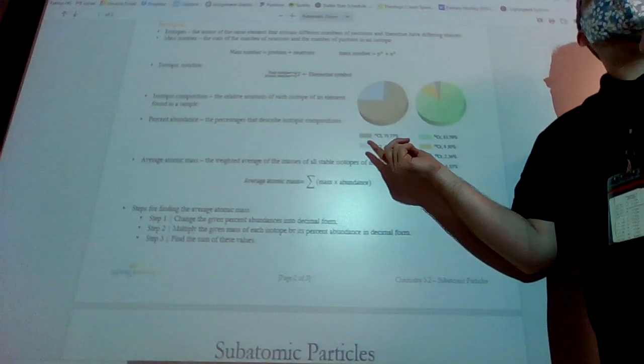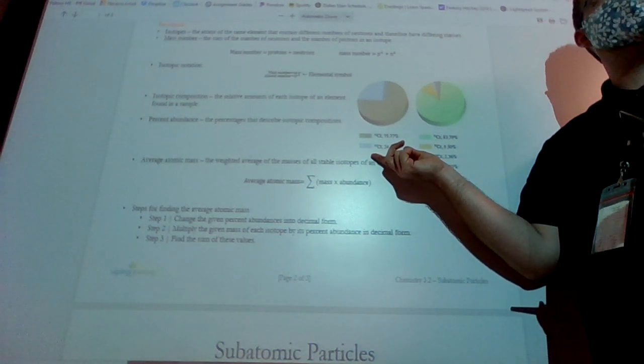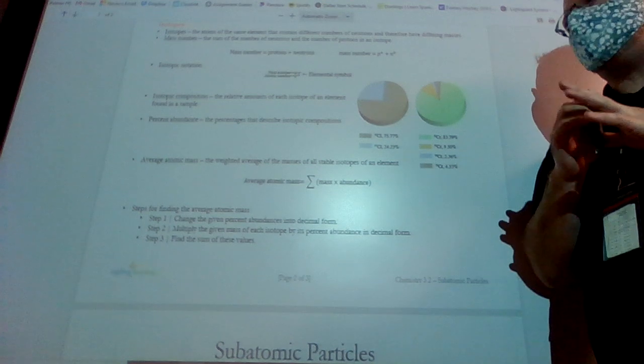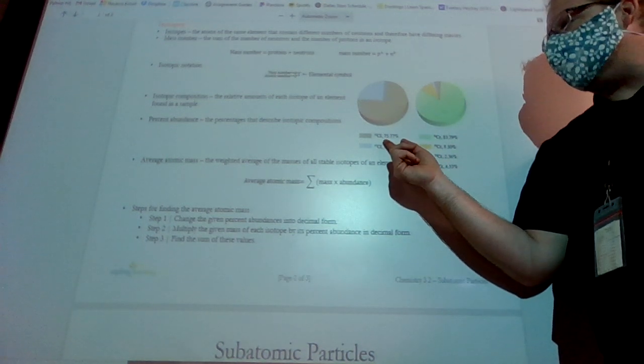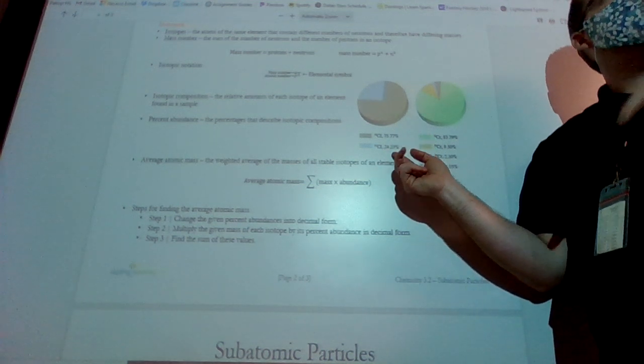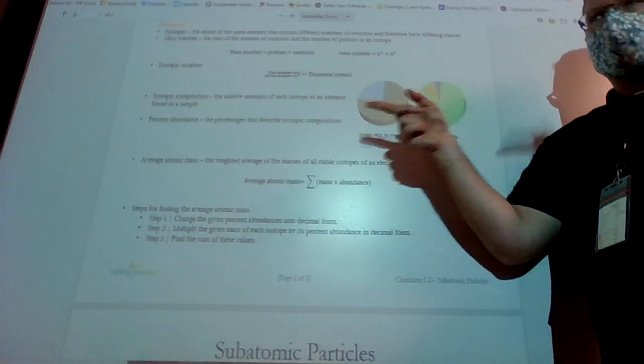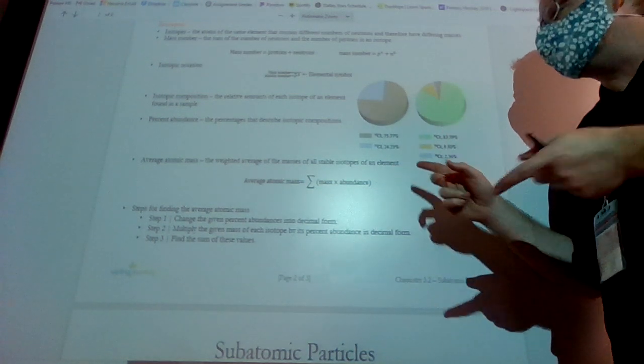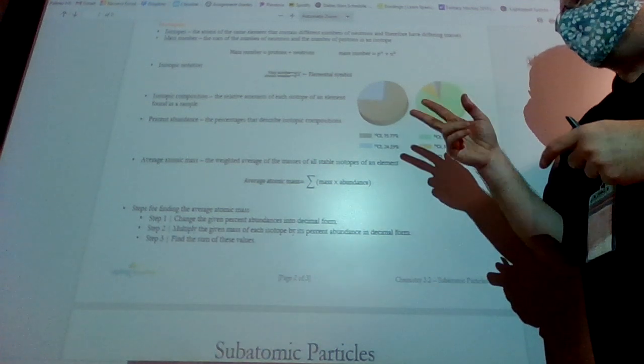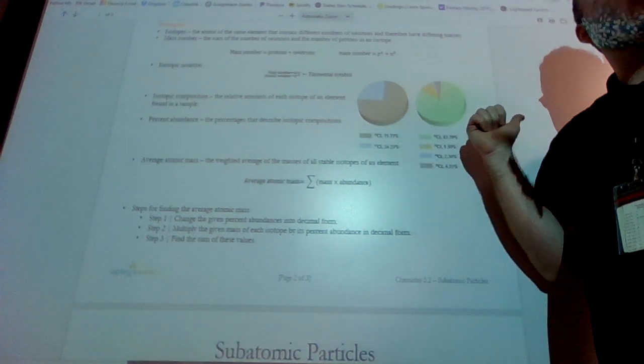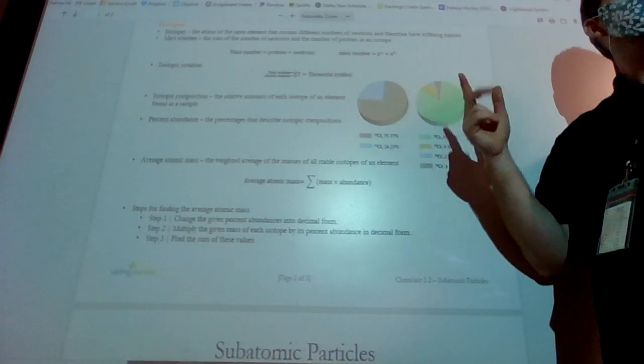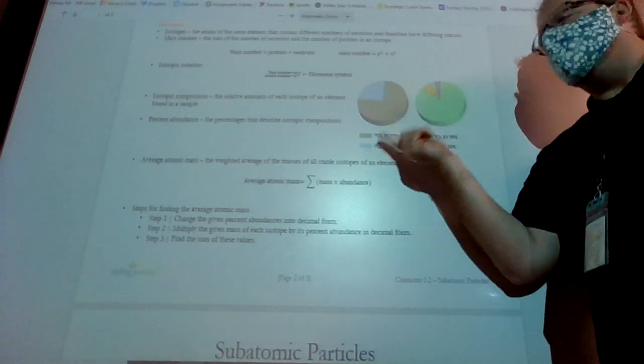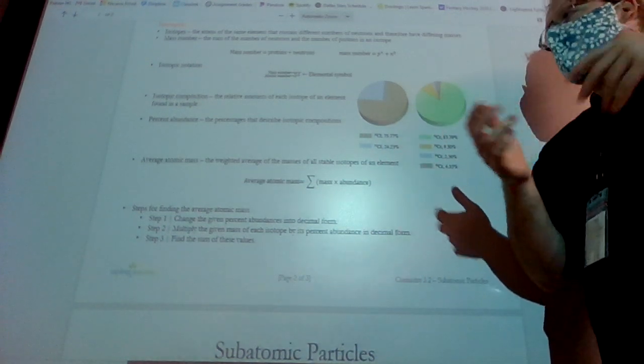There will be at least one problem on average atomic mass. So remember, they're going to give you the percentages. So like here we have 75.77, 24.23. What do I do to turn the percent into a decimal? Move the decimal twice. So I move the decimal twice to the left. And instead of 75%, I get 0.75. Instead of 24%, I get 0.24. I take those numbers. I multiply them by the mass. And they will give you the mass. So you take each mass that works for each one of those. Multiply it by that. And then what do I do with my answers there? Add them together. So move the decimal, multiply by the mass, and then add them together. And that will give me that average.